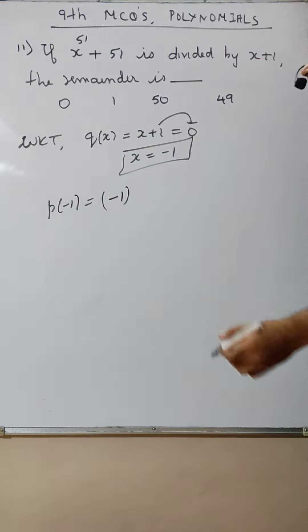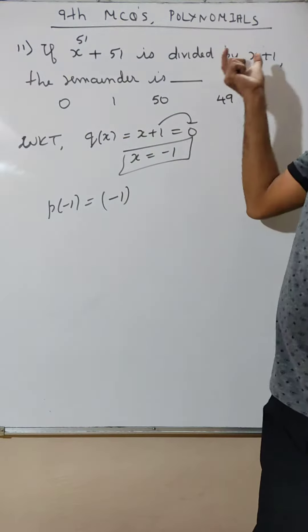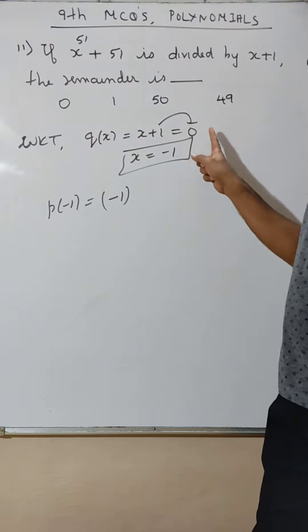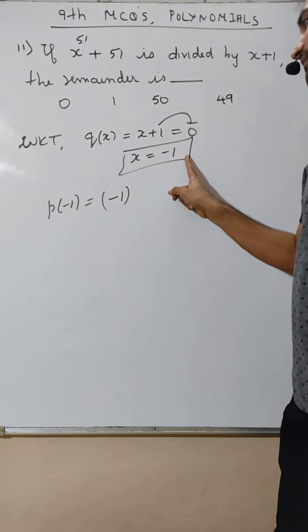and minus 1. Simple error. Take this, equate to 0, shift that this side. p of minus 1 you get.